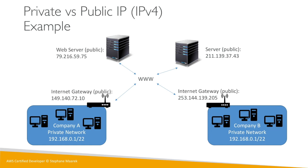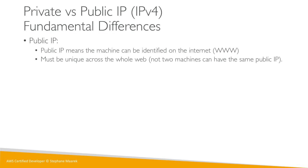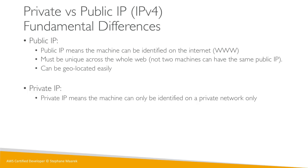With a public IP the machine can be identified on the internet, and the public IP must be unique across the whole web — no two machines can have the same public IP. An IP address can be geolocated; you can just Google it and find a geolocation.